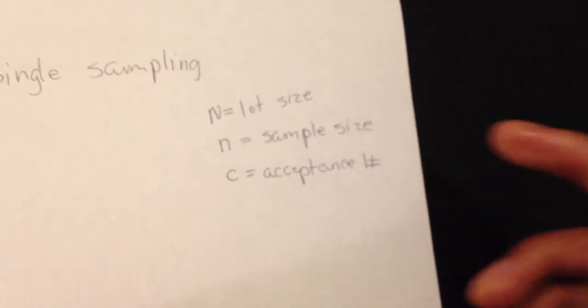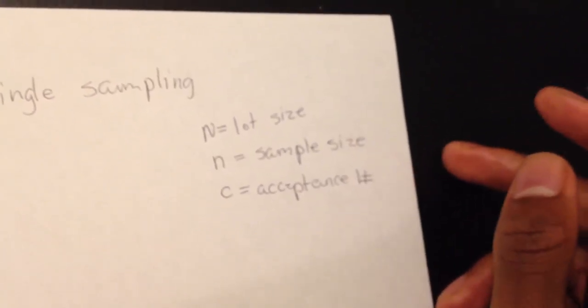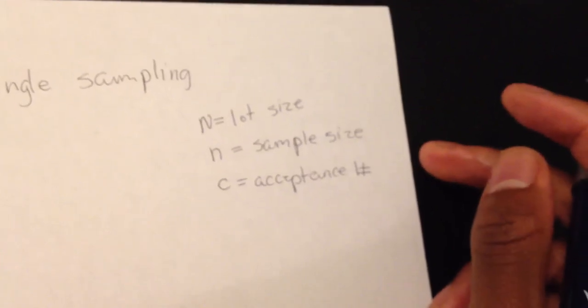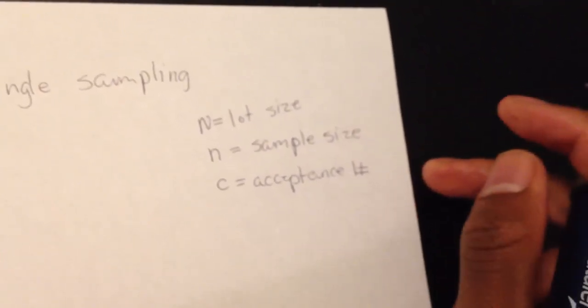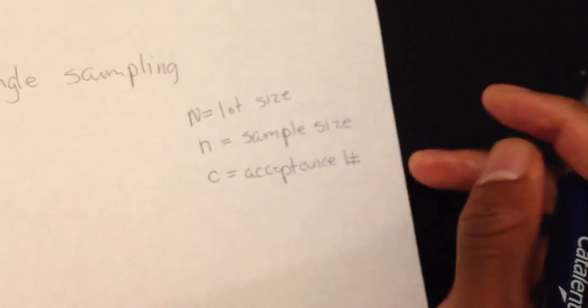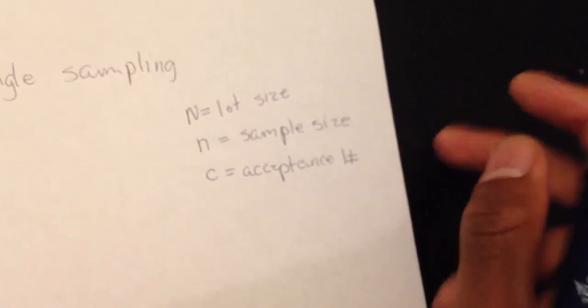Sample size is how many samples you're willing to take out to represent your lot size. And acceptance is how many non-conformities you're willing to accept in your lot before you throw out the whole lot.